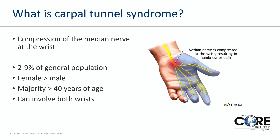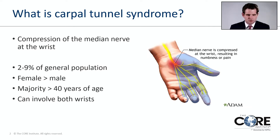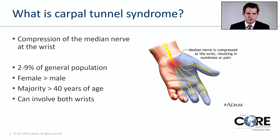What is carpal tunnel syndrome? It's a condition caused by compression of the median nerve at the wrist. It's very common — it can affect up to 9% of the general population. It is more common in women and more common in patients greater than 40 years of age. It can affect one wrist or go on to affect both wrists.